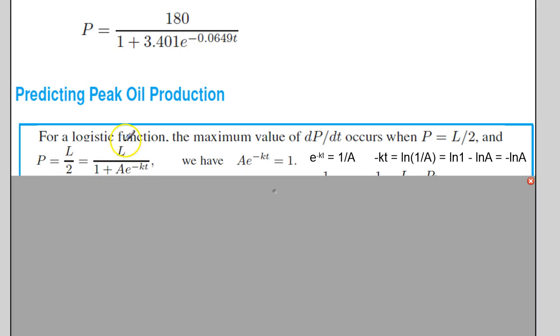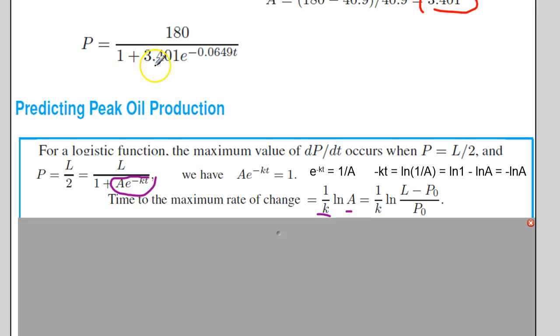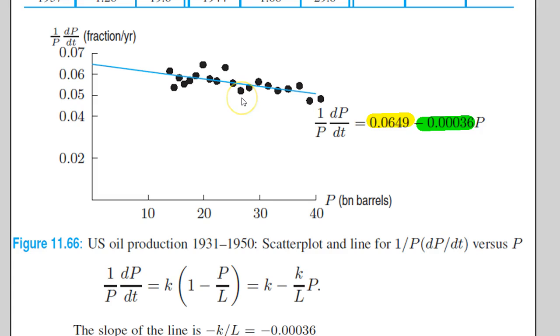Since P is also equal to L over 1 plus A e to the negative kt, if P is going to equal L over 2, then that would imply that this right here would have to equal 1, because L over 2 is going to equal L over 1 plus 1. The question is when will A e to the negative kt equal 1? Using our algebra skills, we can solve this expression to say that when t equals 1 over k times the natural log of A, we'll be able to determine when it will reach the highest value. Since we already know what our A is and what our k is, we can easily find these values.